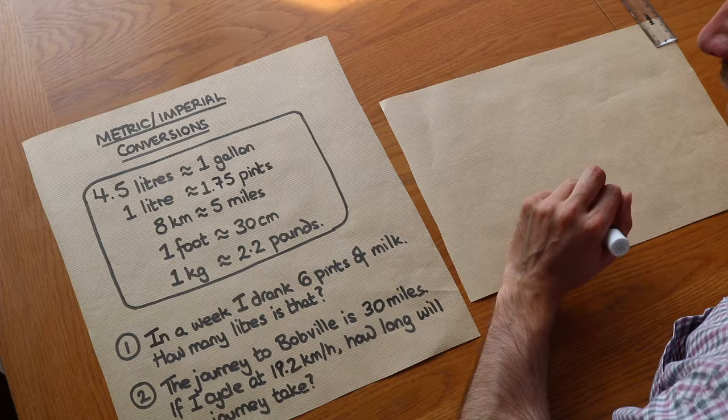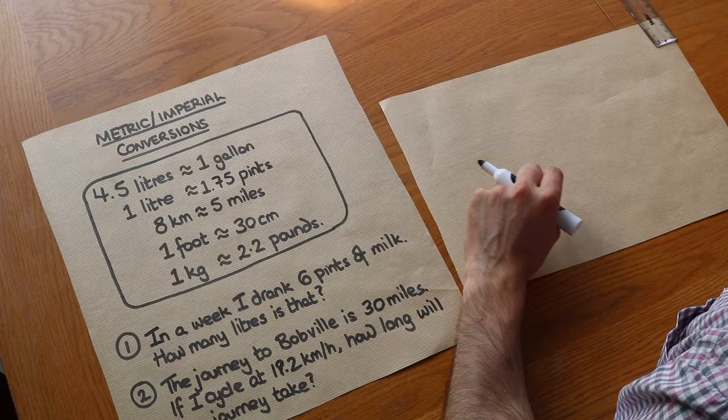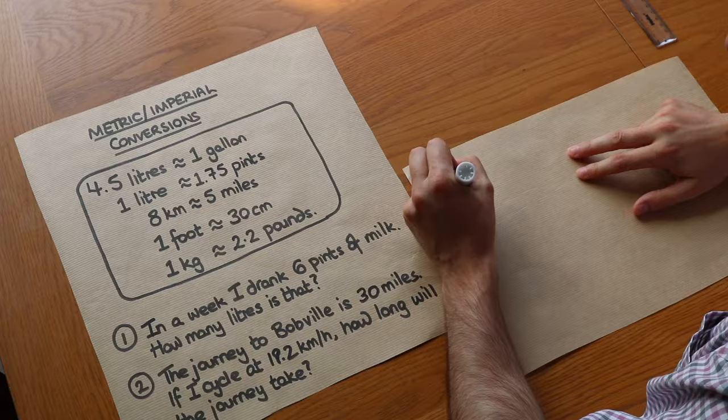8 kilometres is roughly 8 miles, or another way of saying that is 1 mile is roughly 1.6 kilometres. We've got 1 foot is roughly 30 centimetres and 1 kilogram is roughly 2.2 pounds.